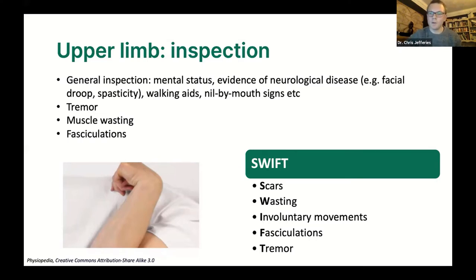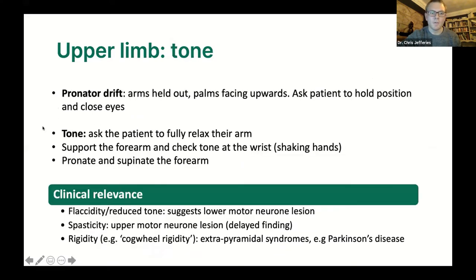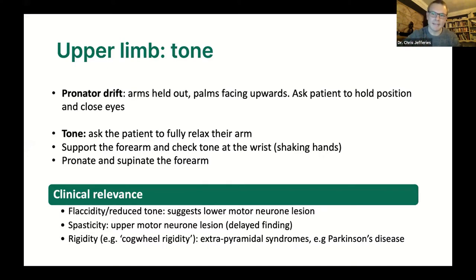Next is tone. At this point you might also test for pronator drift, which I tend to do at the beginning otherwise I forget it. Pronator drift is when you ask the patient to place their arms out in front of them with palms facing upwards, ask them to hold their arms there and close their eyes. It can detect a more subtle upper motor neuron lesion.